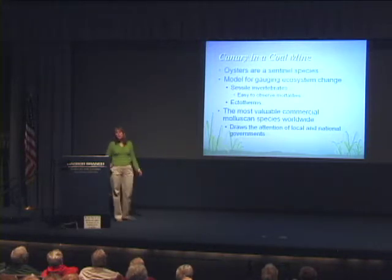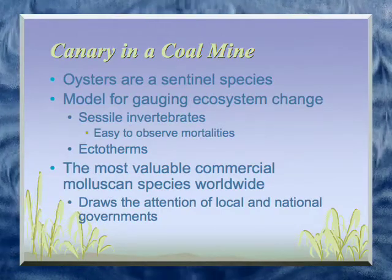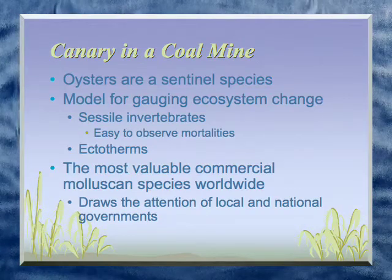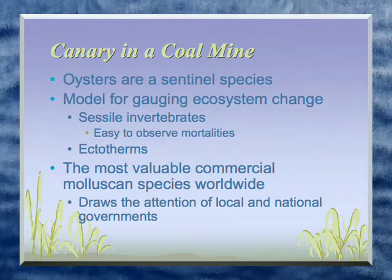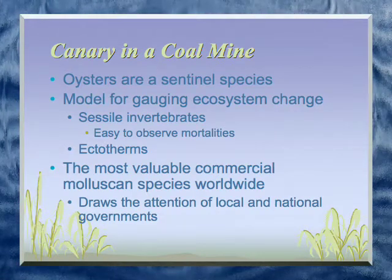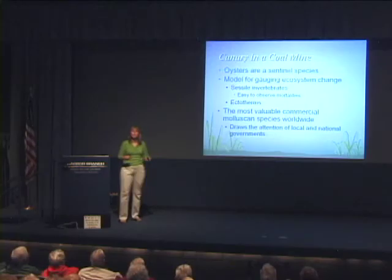Oysters are important for more than just food. They are a good model for telling us whether changes are going on in the ecosystem. They don't move, so when they die, it's easy to determine mortality and percent mortality. That shell doesn't fall very far from the oyster when it dies. They're also cold-blooded, so any changes in temperature will affect the oyster. People also take note of problems with oyster beds because it's the most valuable commercial molluscan species in the world.